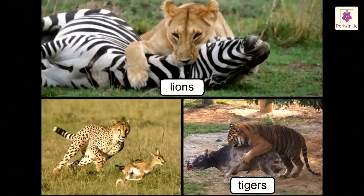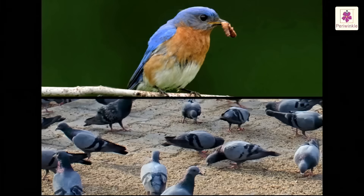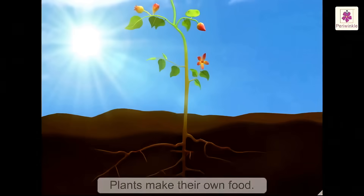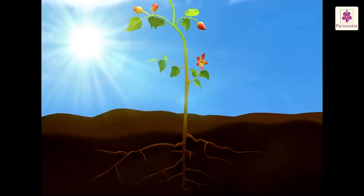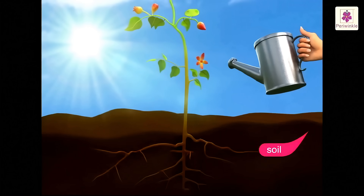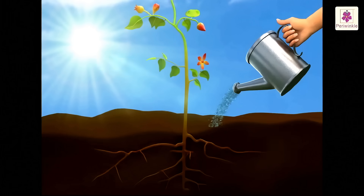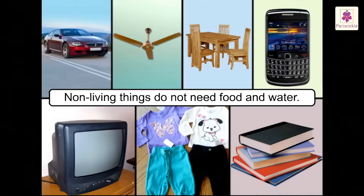Lions, tigers and leopards eat other animals. Most of the birds eat small insects and grains. Plants are the only living things that make their own food. They prepare their food with the help of soil, water and sunlight. All the other living things depend upon plants for their food. Non-living things do not need food and water.